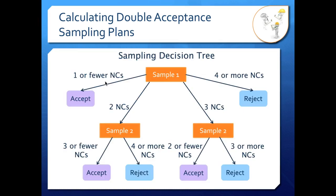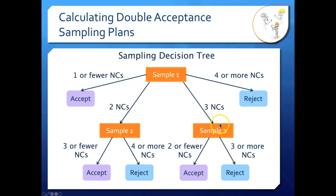What we need to do is draw ourselves a sampling decision tree. In our first sample, our acceptance criteria was 1 and our reject criteria was 4. So if we have one or fewer non-conformities in our first sample, we accept and we're done. If we have four or more non-conformities, we reject and we're done. If we have two or three non-conformities, we can't accept yet because we missed our acceptance criteria, but we can't reject because we don't have four. That's when we take our second sample — so if we have two, we have a branch, and if we have three, we have a branch.